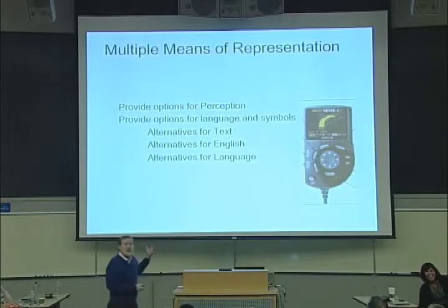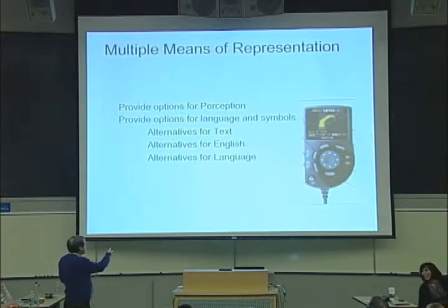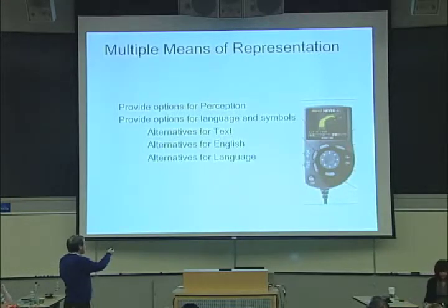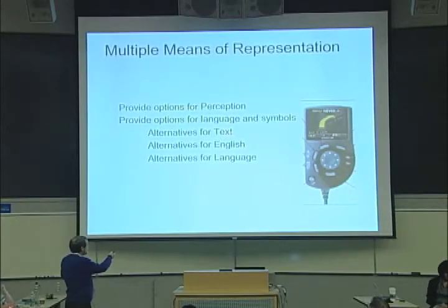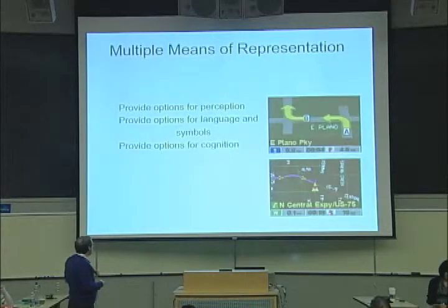These are multiple representations. It says for vision and hearing we've got multiples — you can hear it, listen to it, watch it. But there are also alternatives for language and symbols: alternatives for text, alternatives for English, alternatives for language itself — all built in automatically.